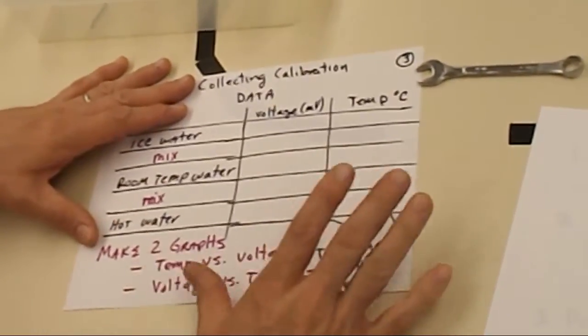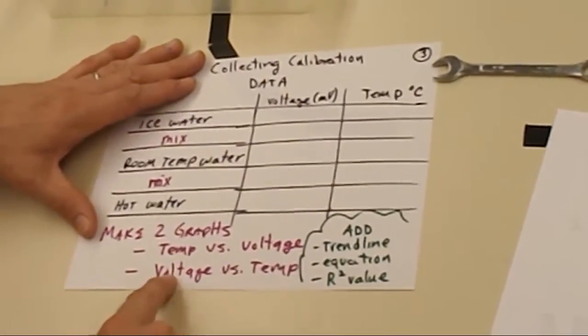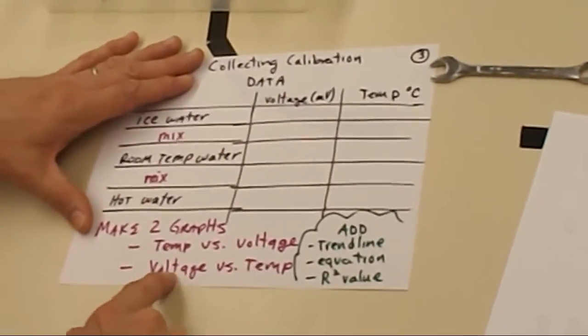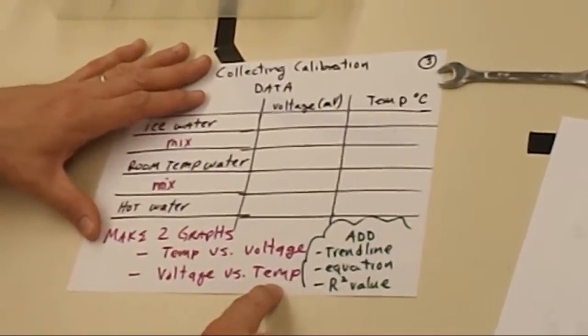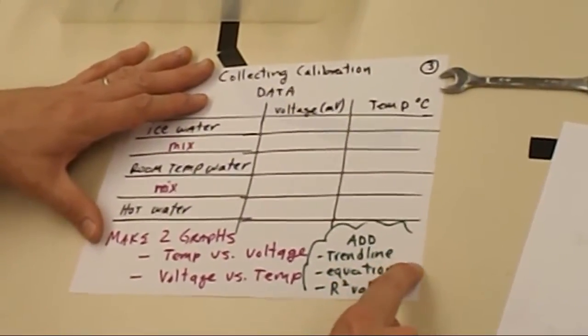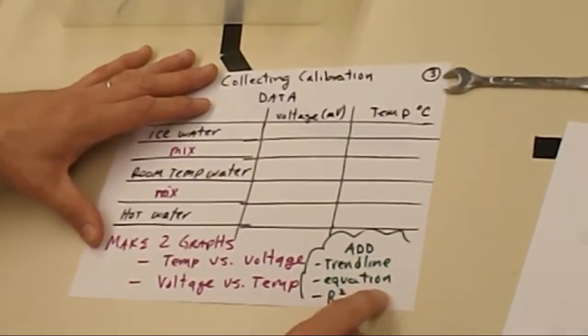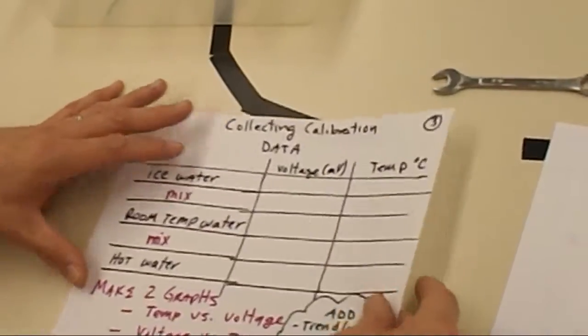What do you need to do once you have that data? You need to create two graphs. One of temperature versus voltage, and then one to flip it around and go voltage versus temperature. We're going to need to add trend lines to the data, include the equation and the R-squared value on the chart. So with that data, you can move on and complete the calibration.